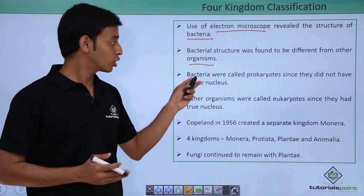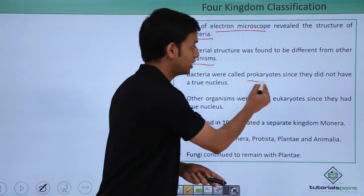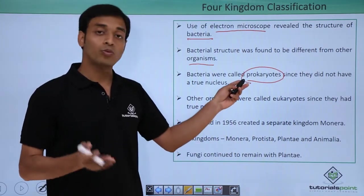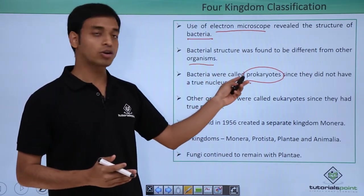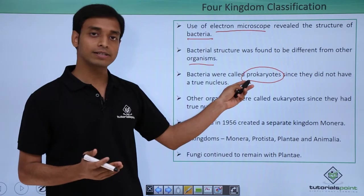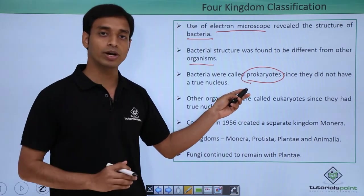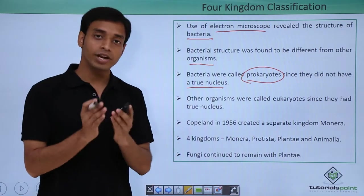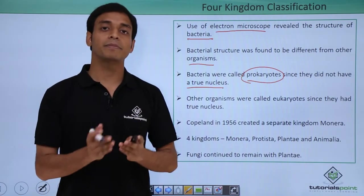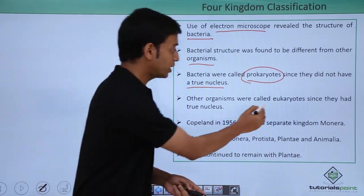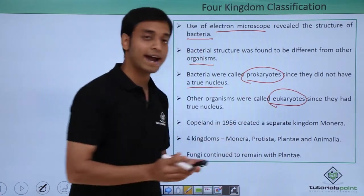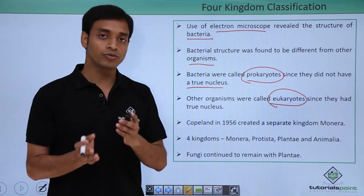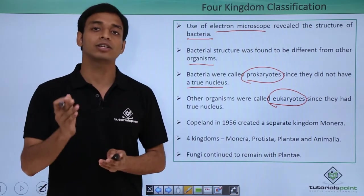Bacteria were called prokaryotes. Pro means primitive, and karyon means nucleus. Bacteria were called prokaryotes because they did not have a true nucleus. Whereas other organisms, other than bacteria, were known as eukaryotes because they possessed a true nucleus. So we got two groups: prokaryotes and eukaryotes.